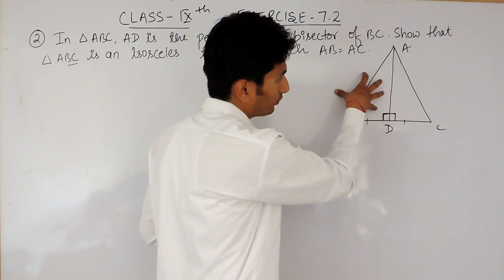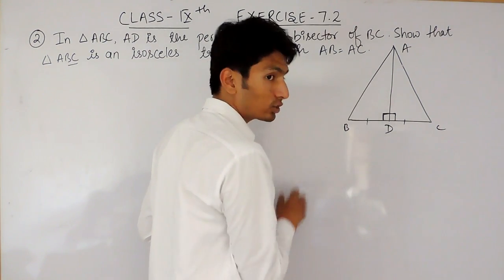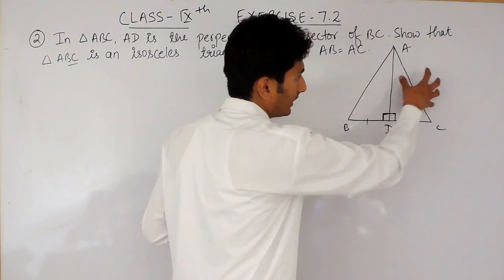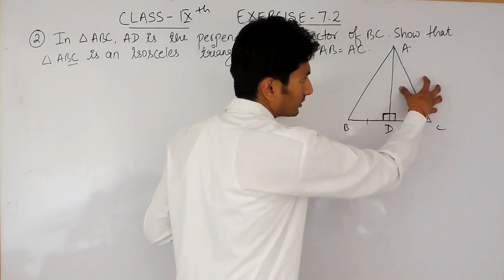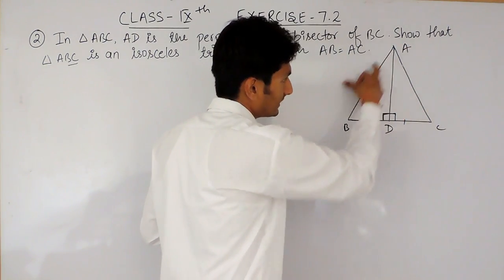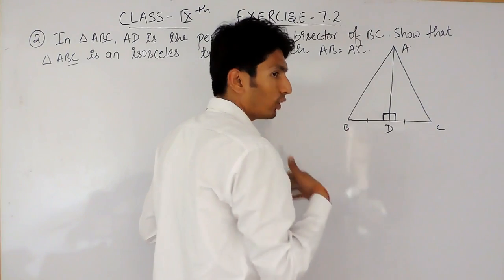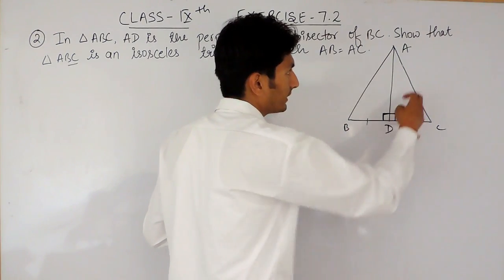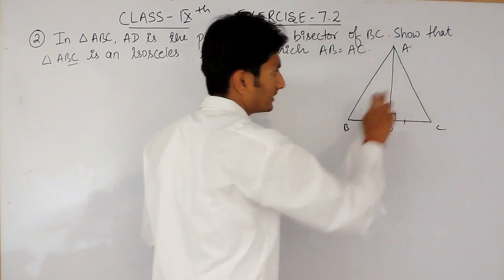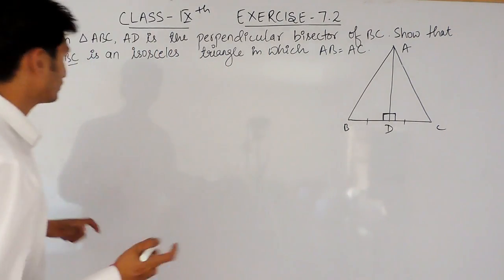you can prove that by proving that this triangle is congruent to this triangle. Now, if this triangle is congruent to this triangle, in that case, this side of this triangle will automatically become equal to this side of this triangle. Now, let's prove this.